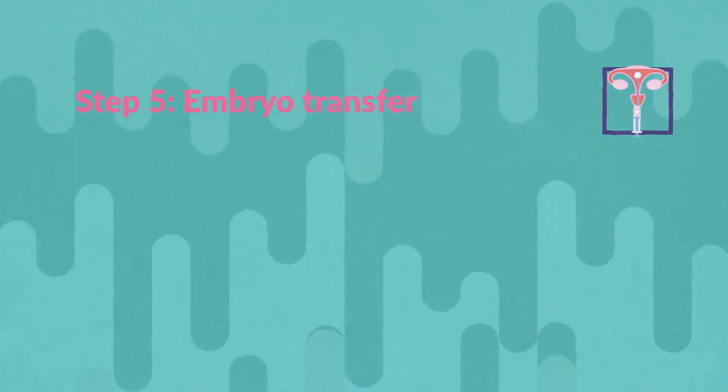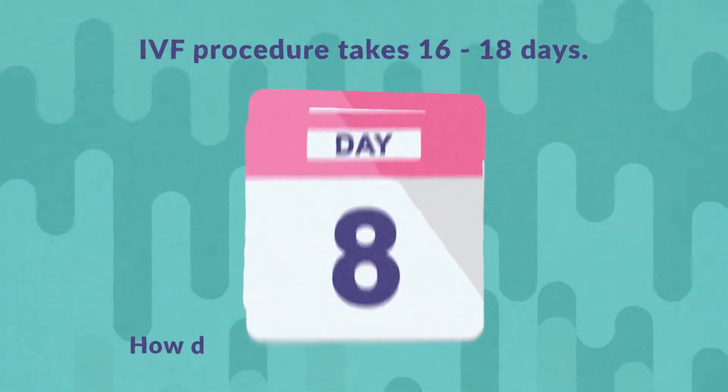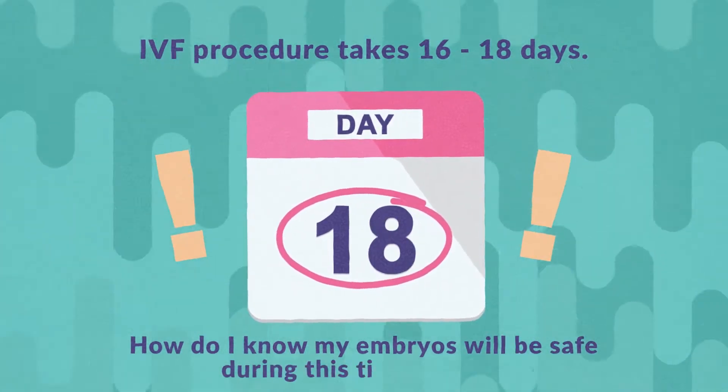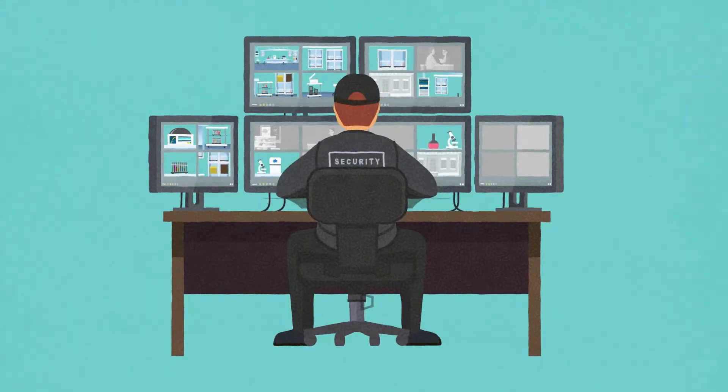Step 5: embryo transfer. Step 6: pregnancy test. Let's also tell you about the witness program that's being used to watch your embryos 24/7 by camera, in case you are worried that you might get someone else's embryos by mistake.